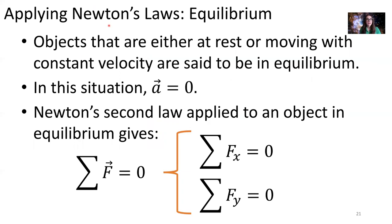For the next few problems, we are going to use Newton's second law in equilibrium. Objects that are either at rest or are moving with constant velocity are said to be in equilibrium. If they're either at rest or moving with a constant velocity, that means their acceleration is zero. So if we apply Newton's second law to objects or systems that are in equilibrium, then the sum of all the forces equaling mass times acceleration — if the acceleration is zero, then the sum of all those forces must equal zero too.